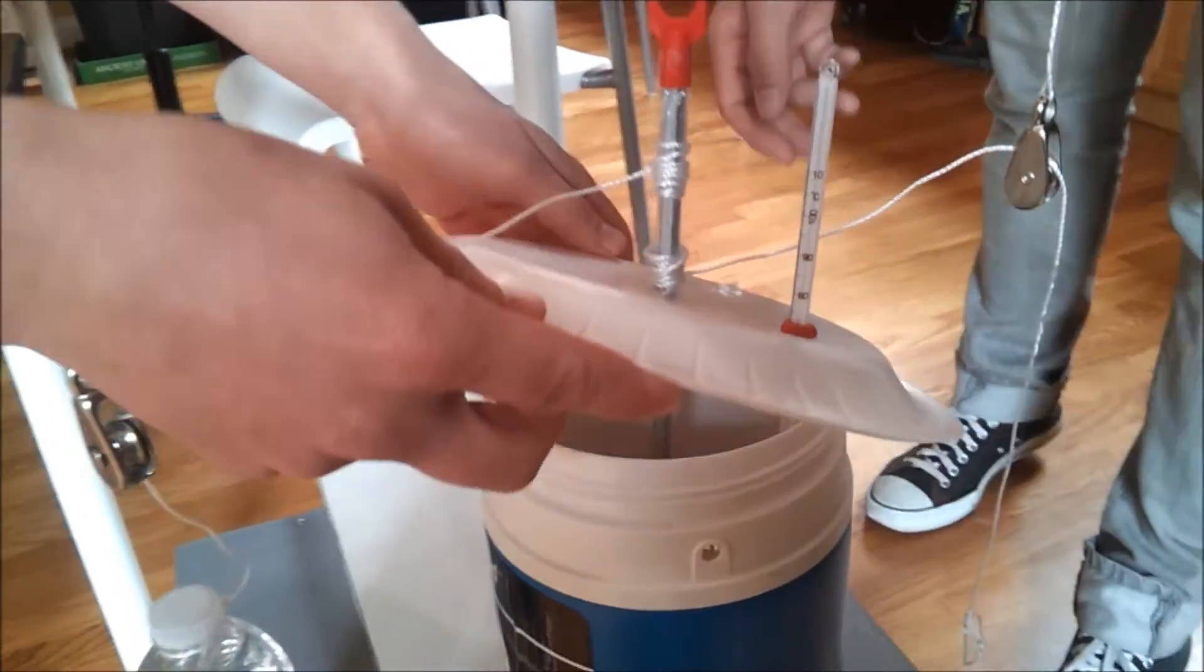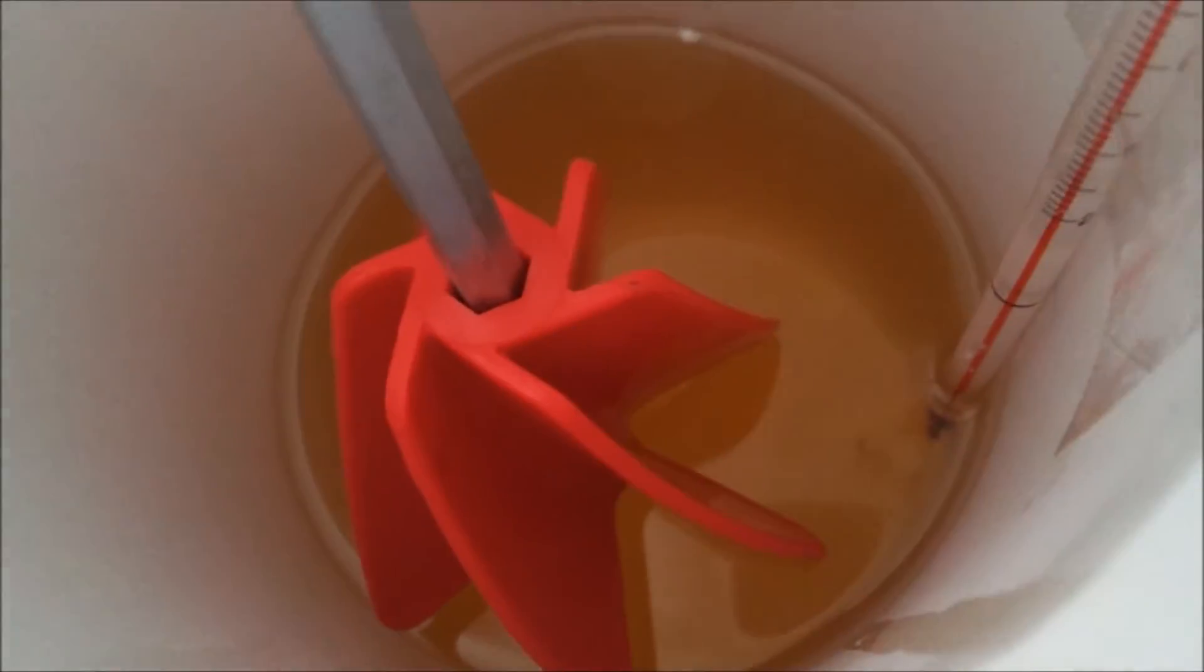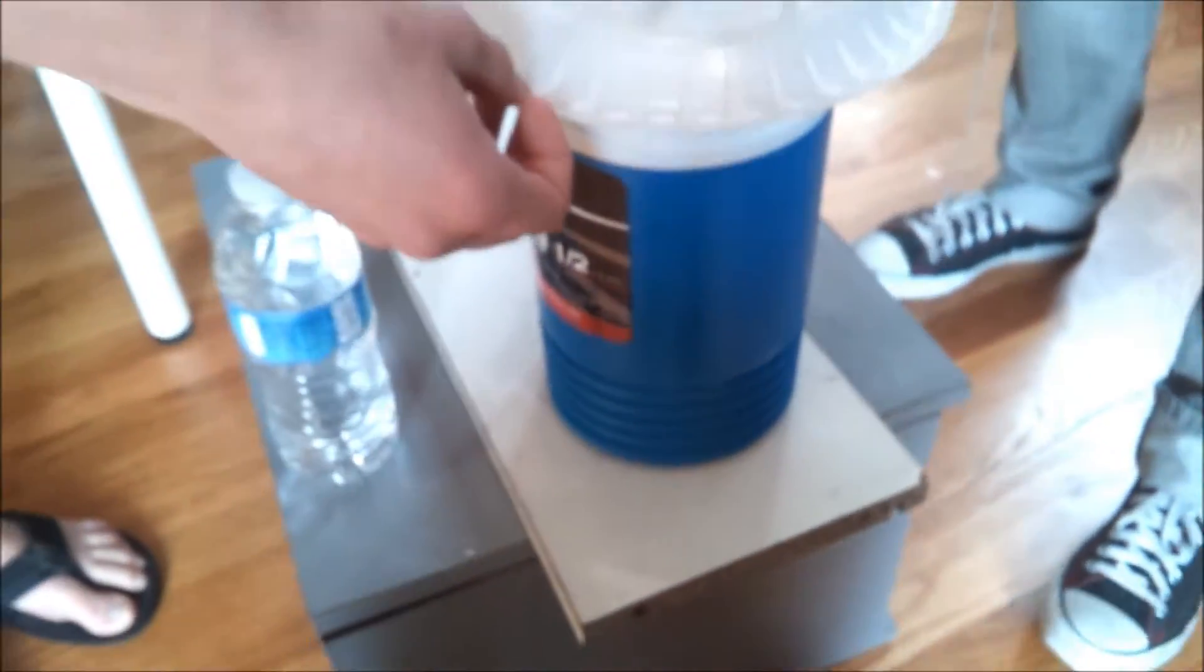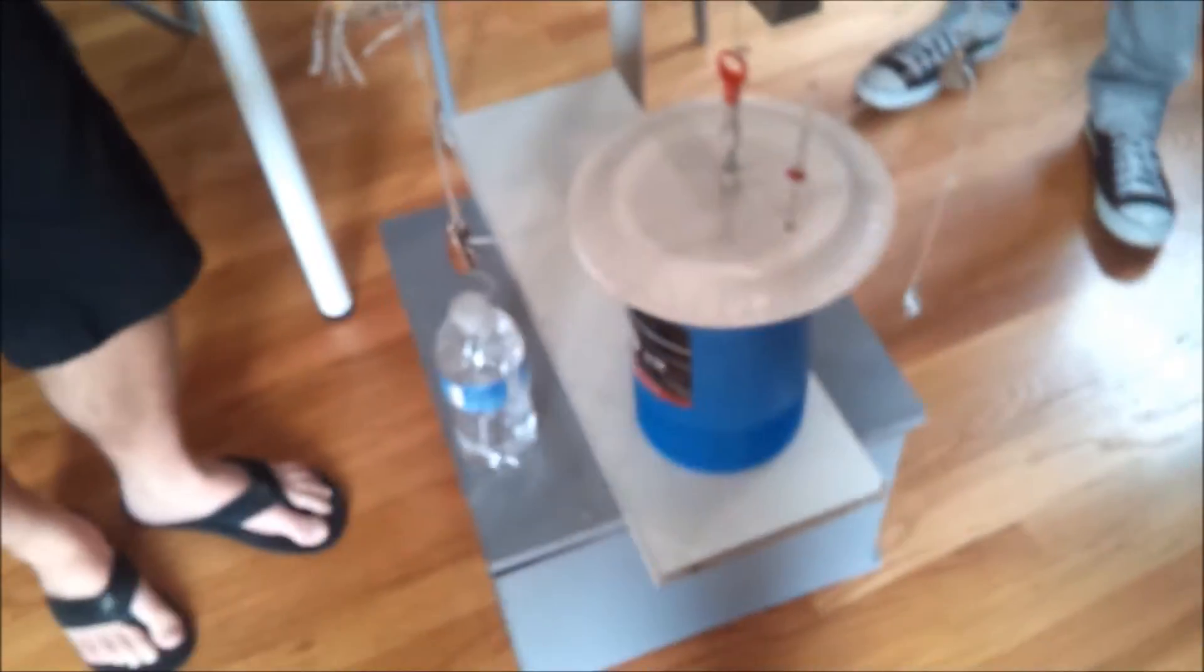Inside is the oil, and then the thermometer is submerged in the oil as well as the stirrer. With our calculations, we determined that it would take 600 drops with the system to raise the temperature to 1 degree.